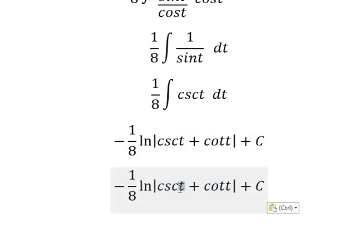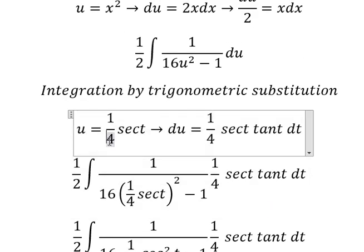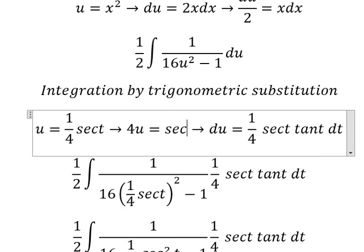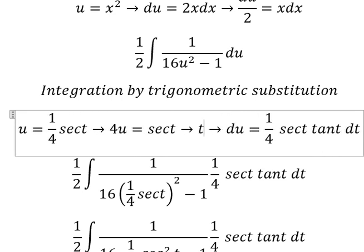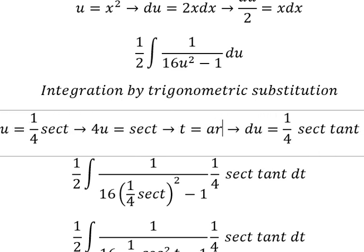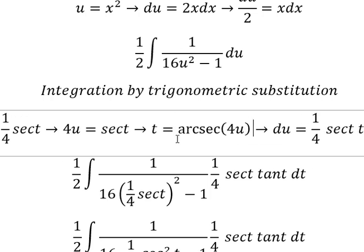About t, that is this one. So we put number 4 to the left. And then we get t equals arcsecant of 4u. So I will put this one to change for t.